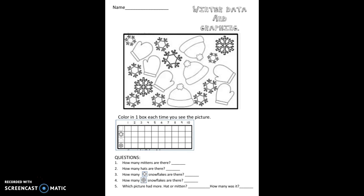The directions are: you're going to color in one box each time you see the picture. So if you see one mitten, you color in one box. If you see another mitten, color in the next box. You color in all the boxes until you match all the pictures.